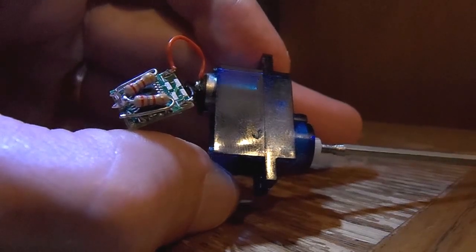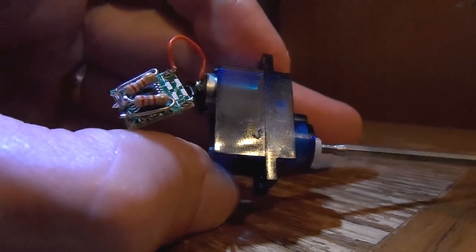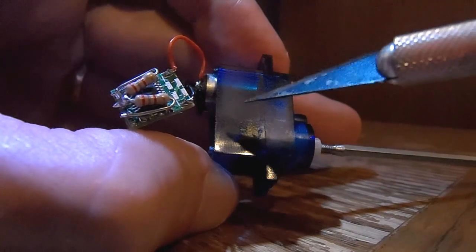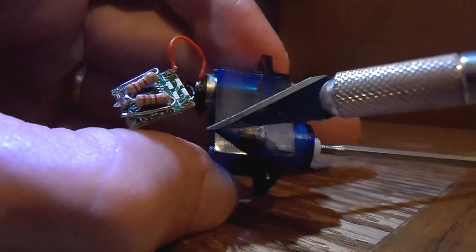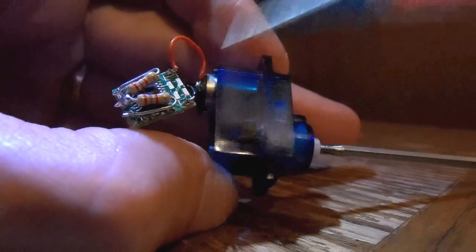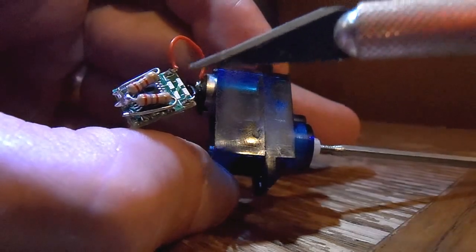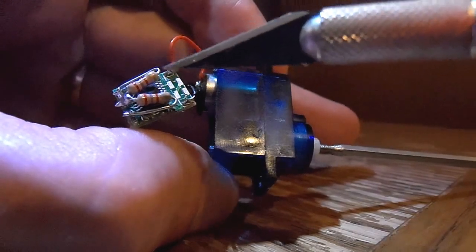Really only one electrical modification to make our servo continuous rotation. Internally I've clipped the three wires going from the potentiometer to the controller board, and basically I've electrically replaced the pot with two fixed resistors.